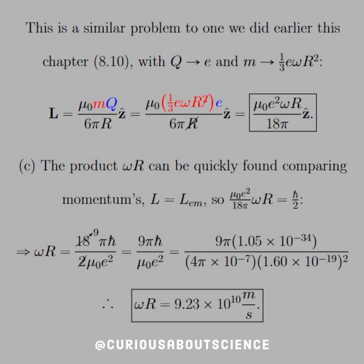The product omega R can be quickly found by comparing momenta: setting L equal to L_EM. We have L from what we found, and we were given h-bar over 2 from the question. So solving for omega R, we multiply over the 18 pi and divide by mu-not E squared. The 2 cancels the 18 to a 9, leaving omega R equals 9 pi h-bar over mu-not E squared. Numerically, this gives a velocity equal to 9.23 times 10 to the 10 meters per second. This doesn't seem right for an electron, but we'll go ahead and move forward.